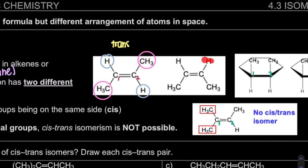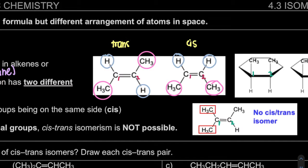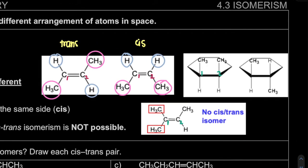For the cis case, looking at carbon 1 and carbon 2, when the same group — CH3 — is on the same side, we call it cis. So, if CH3 and CH3 are on the same side, it is cis. If CH3 and CH3 are on opposite sides, it is a trans isomer.